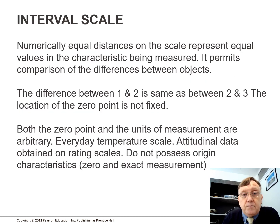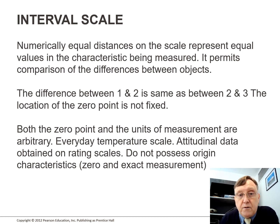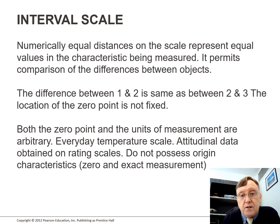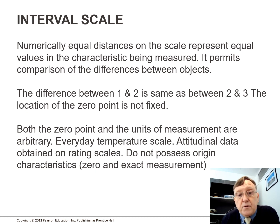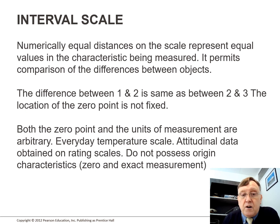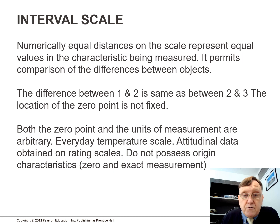The interval scale: numerically equal distances on the scale represent equal values in the characteristics being measured. It permits comparison of the difference between objects — the difference between 1 and 2 is the same as between 2 and 3. The location of the zero point is not fixed; both the zero point and the unit of measurement are arbitrary. An everyday example is the temperature scale. Attitudinal data obtained on rating scales are also interval. Interval scales do not possess an origin characteristic.